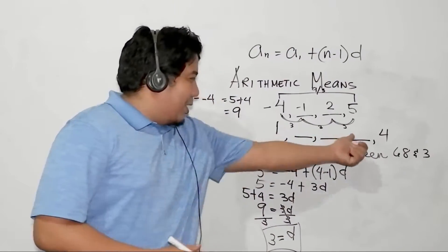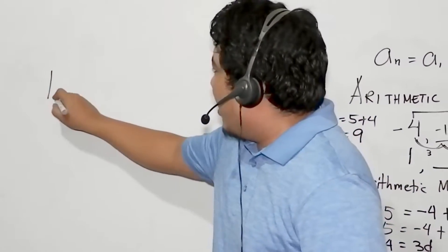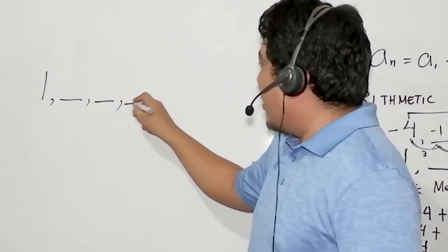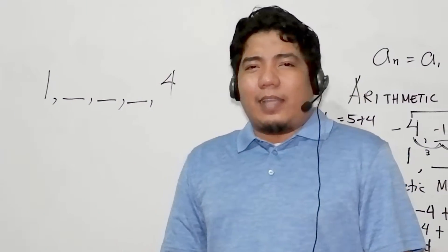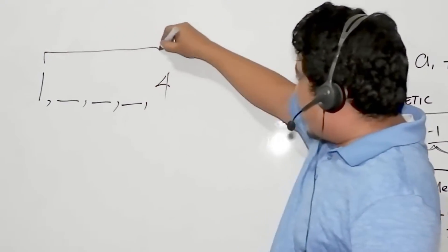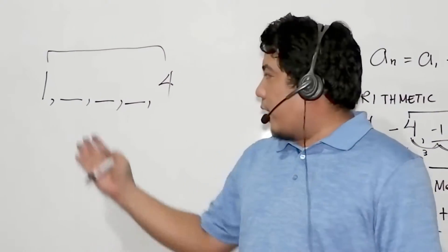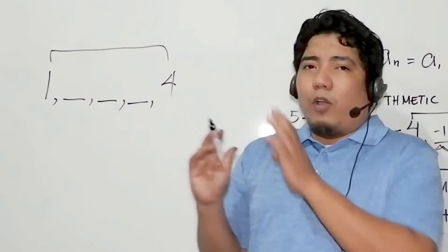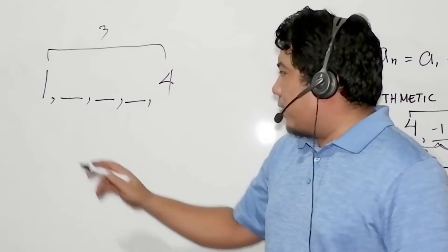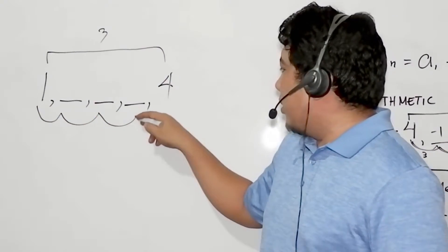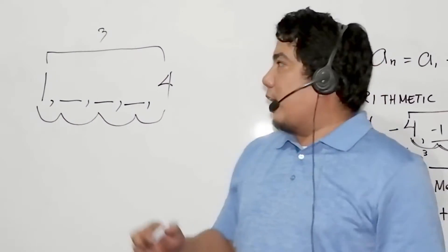Easy, right? Now, let's consider this one. We have 1, blank, blank, blank, blank, and then 4. In getting the technique, very simple. What we will do is you get the difference of this one. It is still increasing. So 1 and 4, 4 minus 1 is 3. Now how many steps did we get? 1, 2, 3, 4. There are 4 steps.